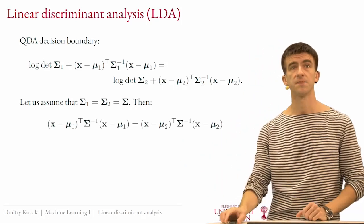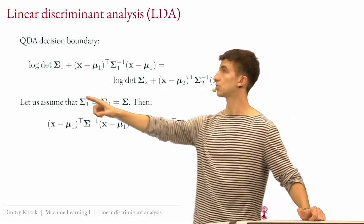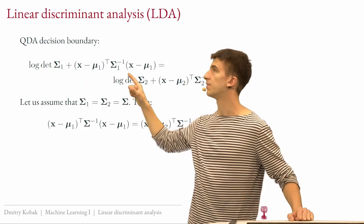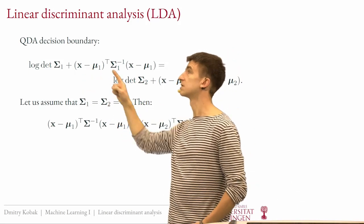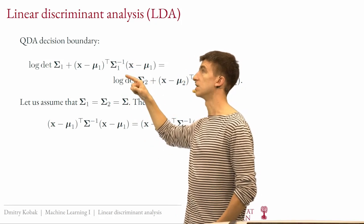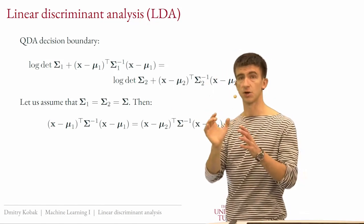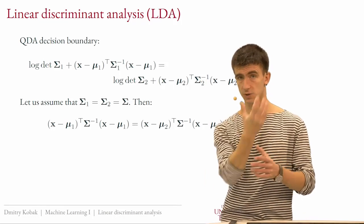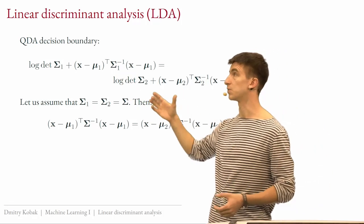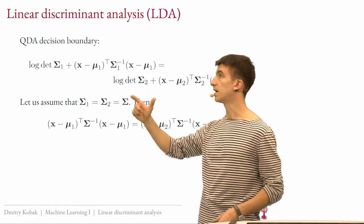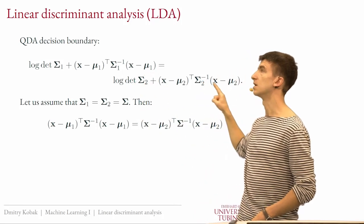With Σ_1 = Σ_2 = Σ, the determinant terms cancel — very convenient. When you open the brackets, you notice the quadratic term x^T Σ^{-1} x appears on both sides and cancels out. That's the term that makes QDA quadratic — the Q in QDA. What survives are the linear terms: x^T Σ^{-1} μ_1 and x^T Σ^{-1} μ_2.